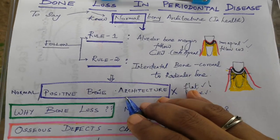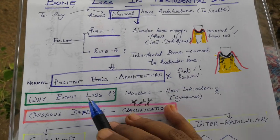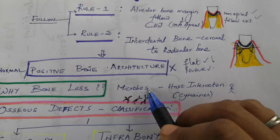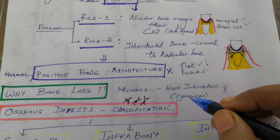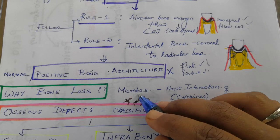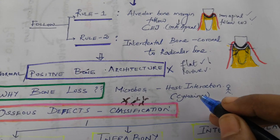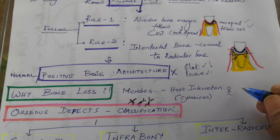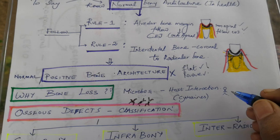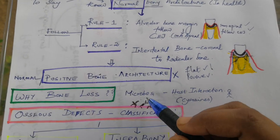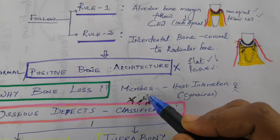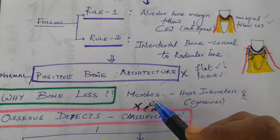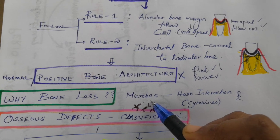Positive bony architecture is the normal bony architecture. As for why bone loss occurs, microorganisms are not solely responsible for bony destruction. The host responding to microorganisms releases many cytokines and chemical mediators, which ultimately lead to periodontal destruction. Both the microorganisms and the host immune response are important in bony destruction.